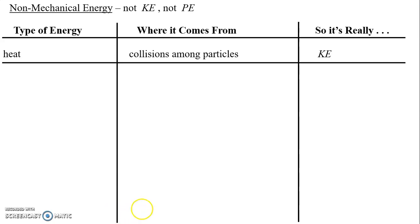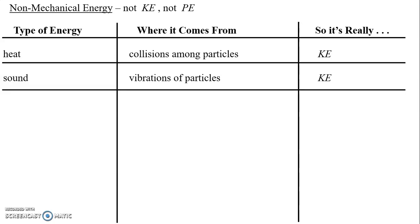Another type of non-mechanical energy students often identify is sound. Where does sound come from? To generate sound or music, something has to be vibrating — it comes from vibrations of particles. For example, if you clap your hands together, the particles of your hands are actually vibrating, but you can't see that at the subatomic, microscopic level. Since they have to be vibrating, it's a form of kinetic energy — just at the microscopic level, so it's a non-mechanical form of energy.